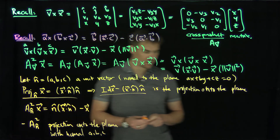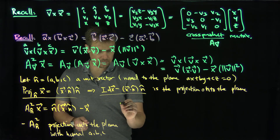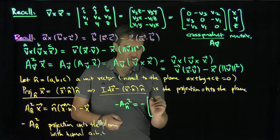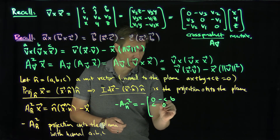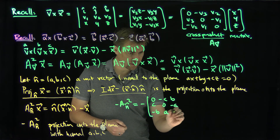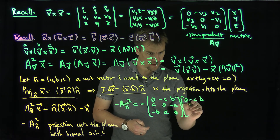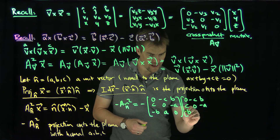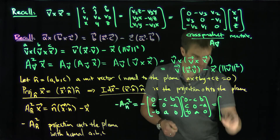So let's compute the negative of that calculation. Our negative A_n̂ squared is going to be the negative of the matrix [0, -c, b; c, 0, -a; -b, a, 0] squared — that is, we multiply this matrix by itself once more: [0, -c, b; c, 0, -a; -b, a, 0]. Now let's expand this out and see what we get.